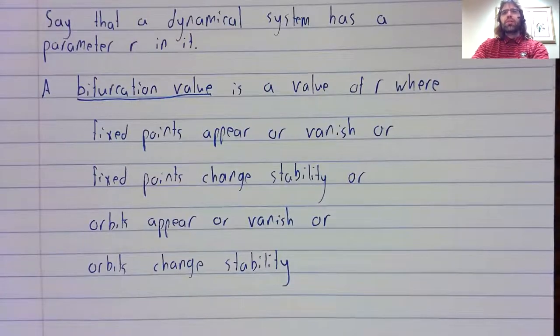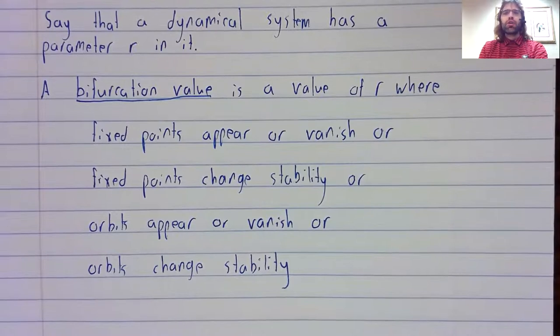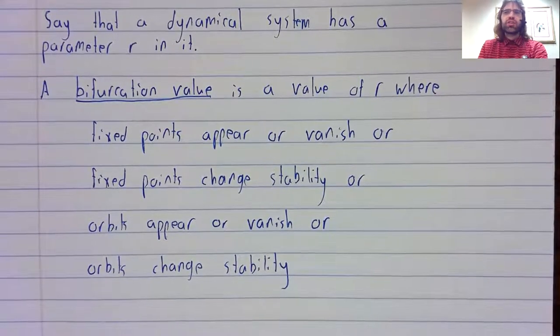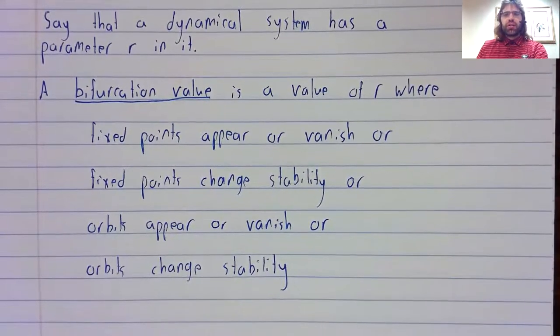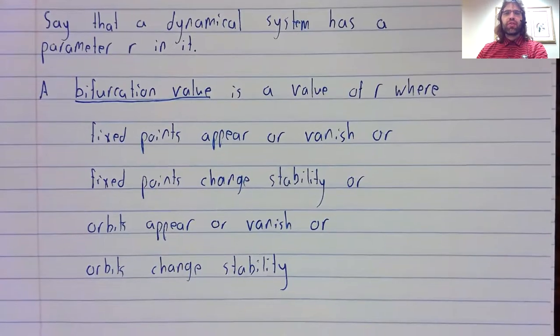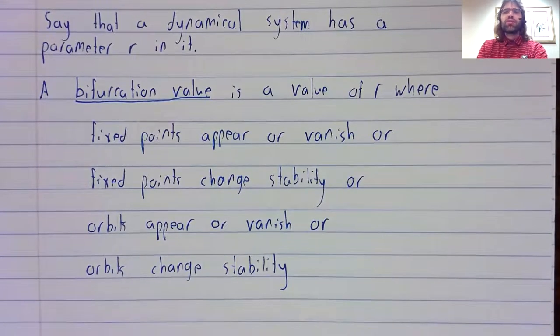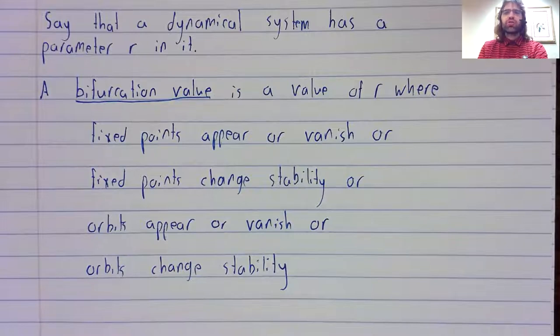Let's say that a dynamical system has some parameter R in it, like the logistic model did. Then a bifurcation value is a value of R where fixed points appear or vanish or change stability, or where periodic orbits appear or vanish or change stability.